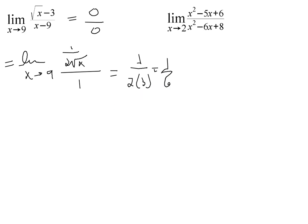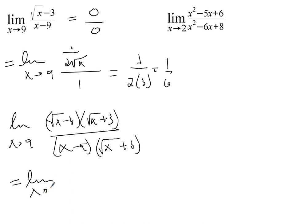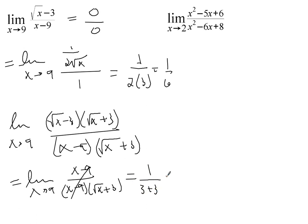Alternatively, you can also multiply by the conjugate. If you choose to do it that way, you get the limit as x approaches 9 of (√x minus 3) times (√x plus 3) over (x minus 9) times (√x plus 3). In the numerator, that gives you x minus 9. When those x minus 9's cancel, you just end up with 1 over √9 plus 3, which is 1/6.